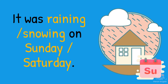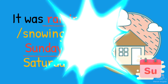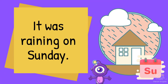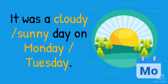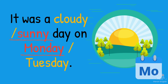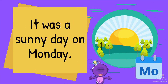Choose the correct words. It was raining on Sunday. Choose the correct words. It was a sunny day on Monday.